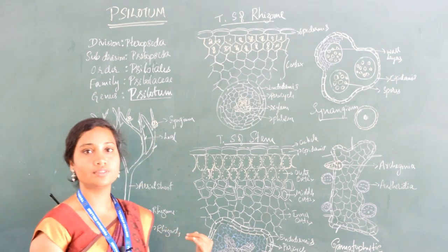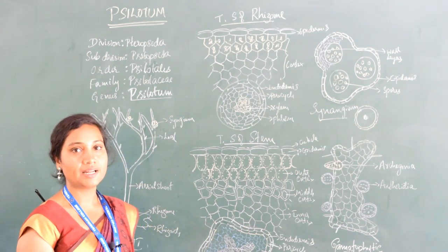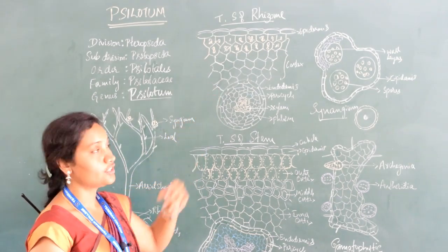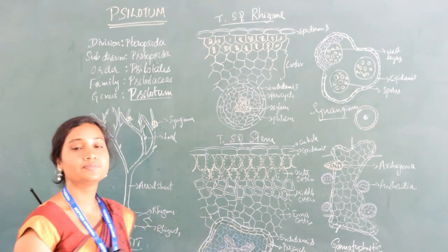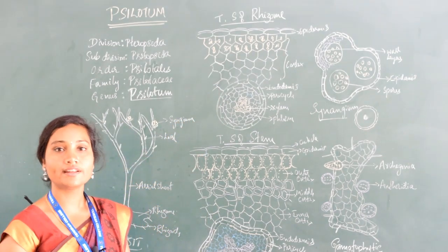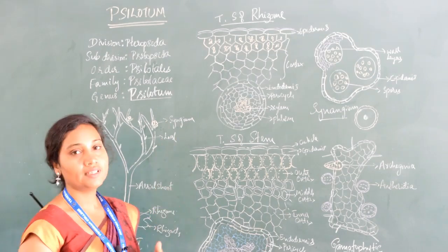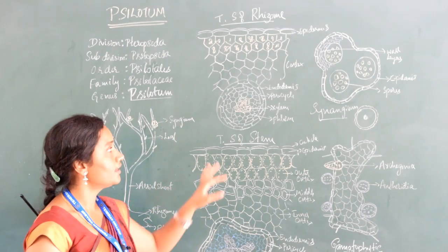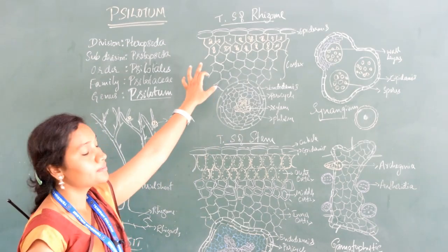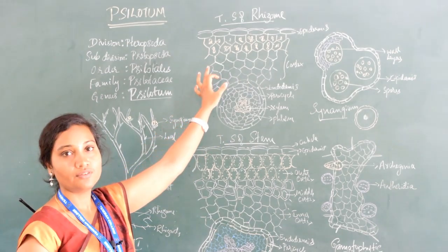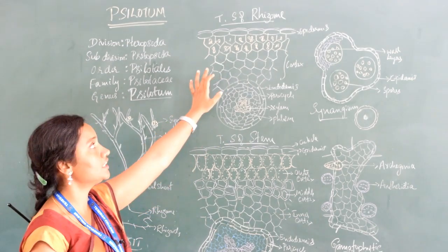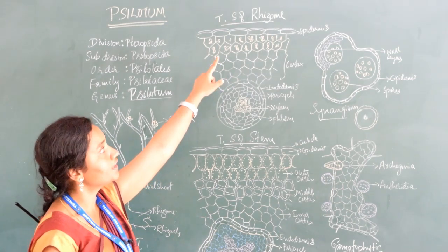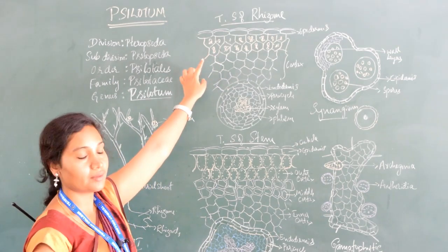Now we will move on to the internal structures of the plant body, starting with the TS of rhizome. The TS of rhizome is circular in outline, differentiated into epidermis, cortex, and the stele region. The epidermis is made up of a single layer of parenchymatous cells and is highly cutinized at the upper part.